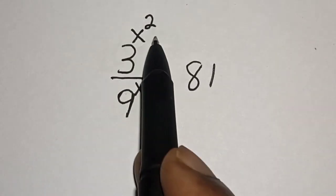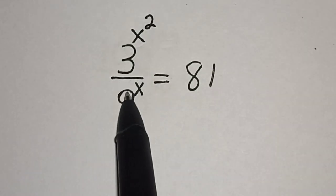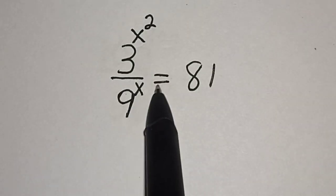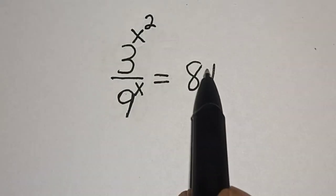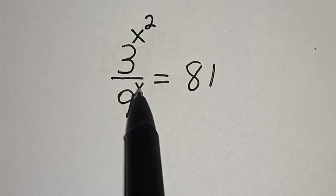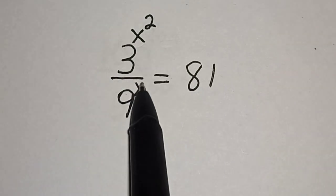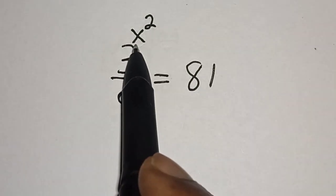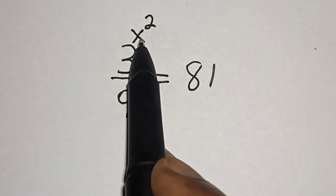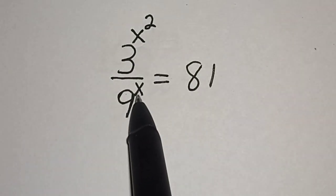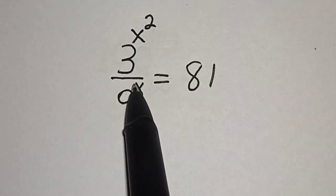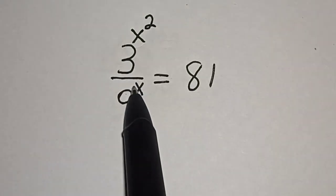3 raised to power x squared divided by 9 raised to power x is equal to 81. Hi everyone, welcome to my class. In this class, we want to find the value of x from this equation.